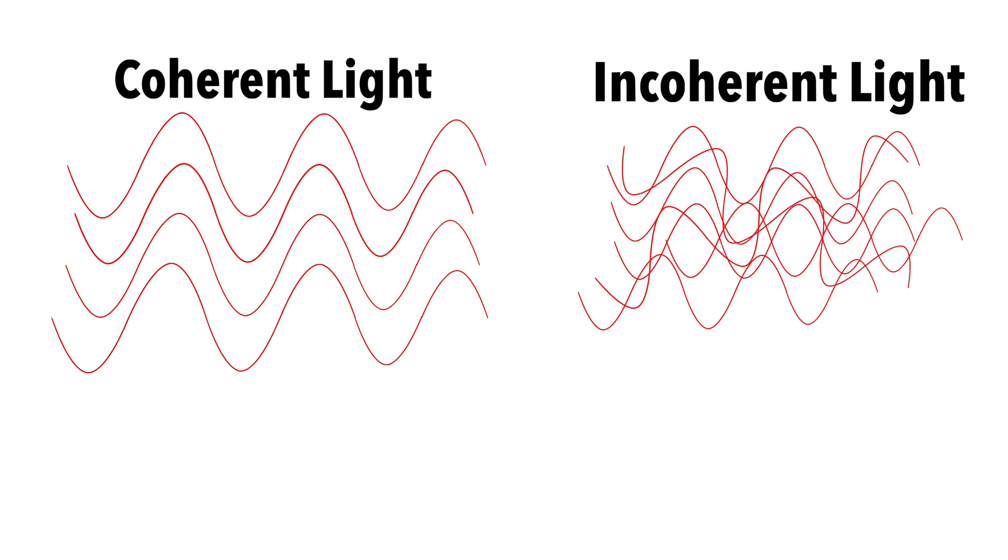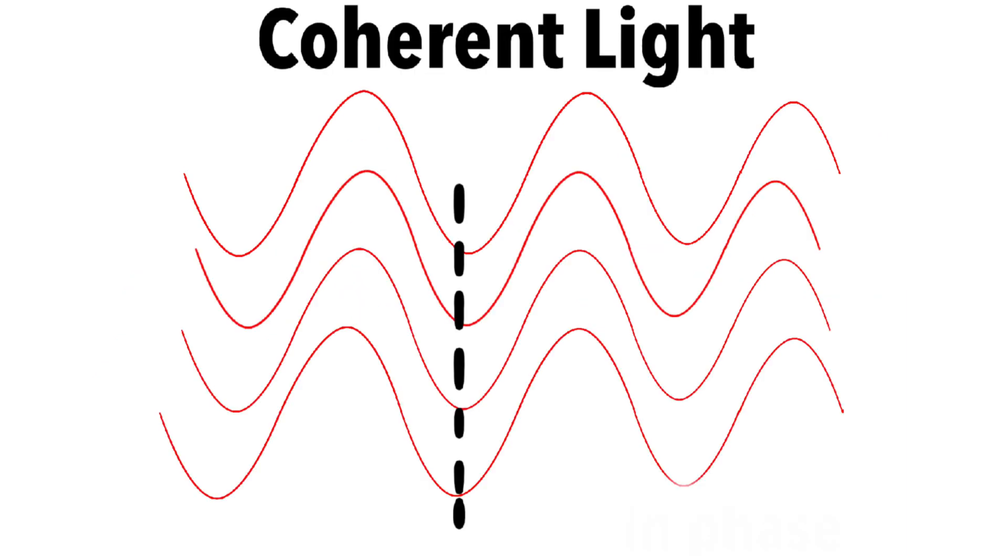Now, the difference between these two lights are pretty simple to see. Coherent light, as you can see, all the light waves line up. They are together and go the same direction and pattern. These light waves are called in-phase because all these light waves line up with each other.